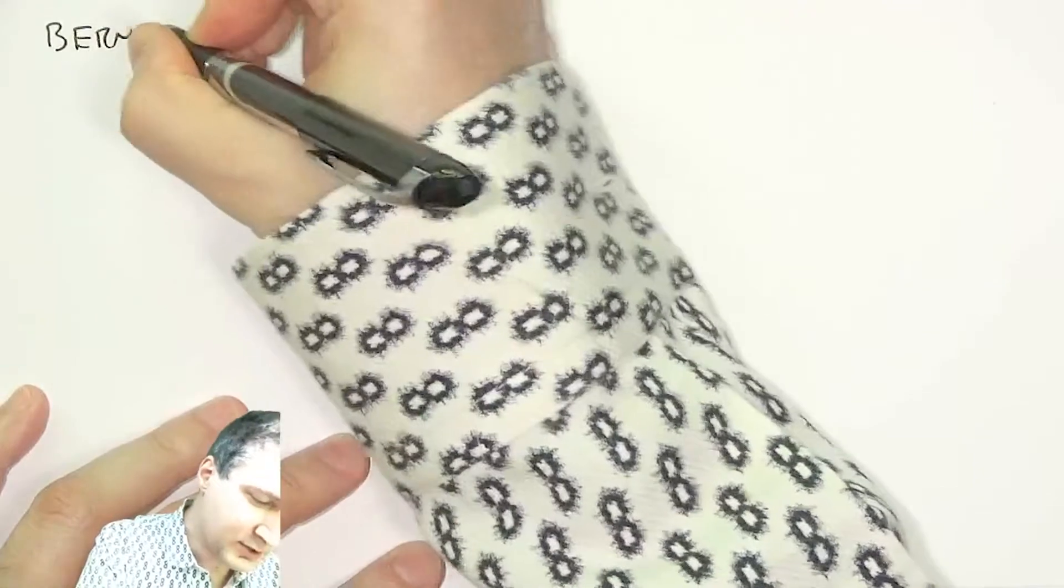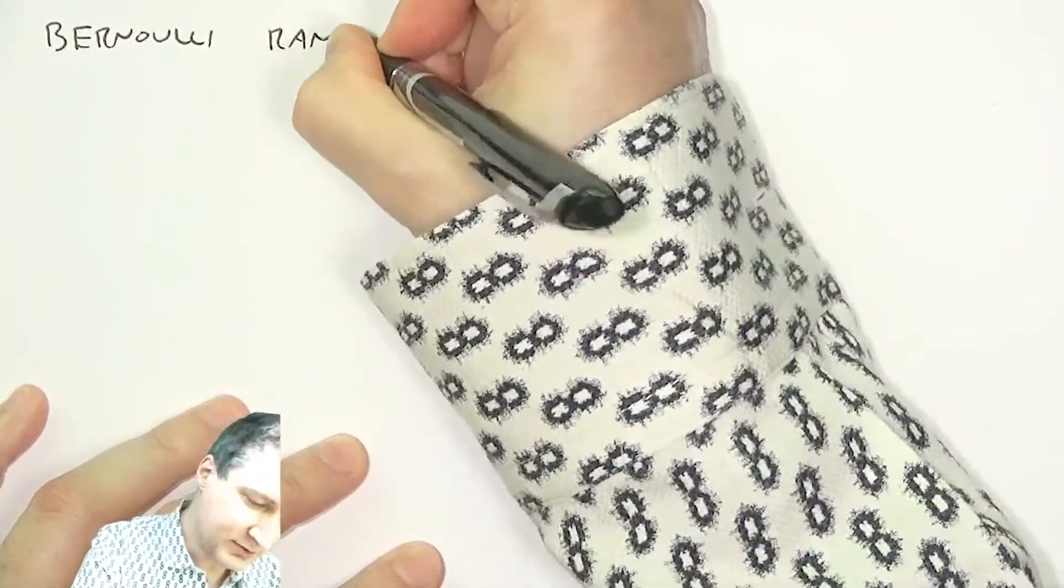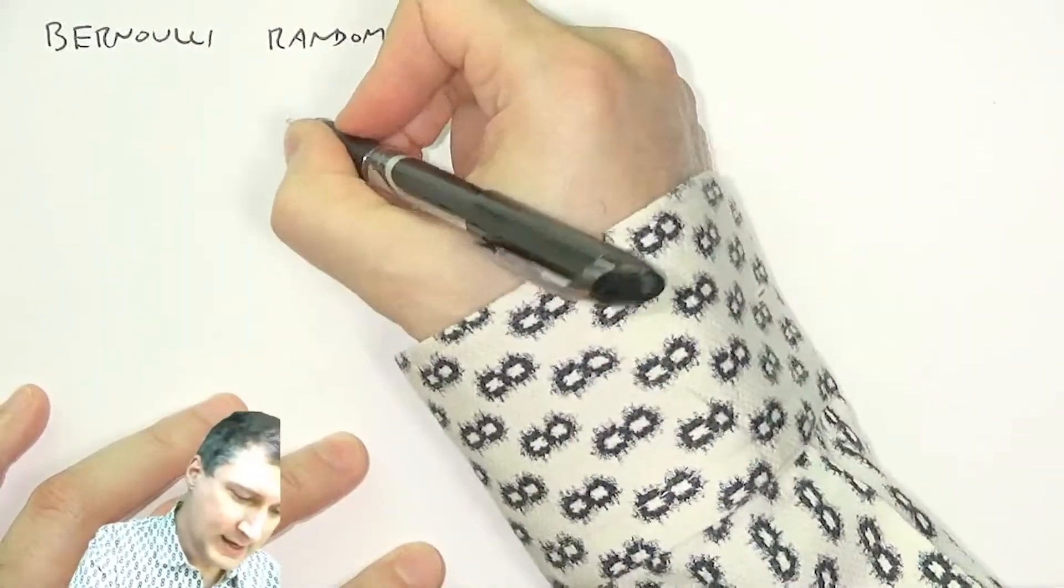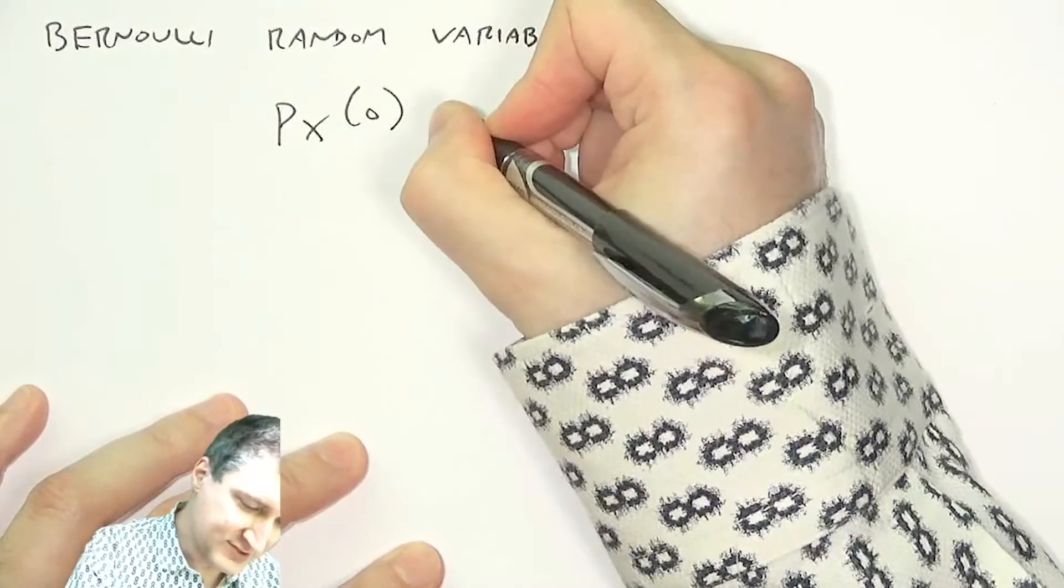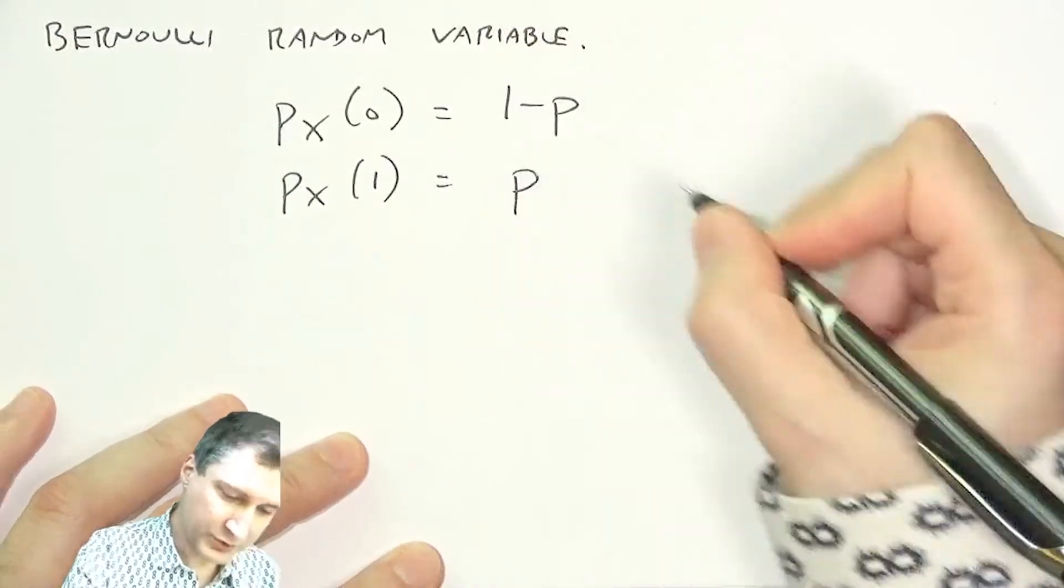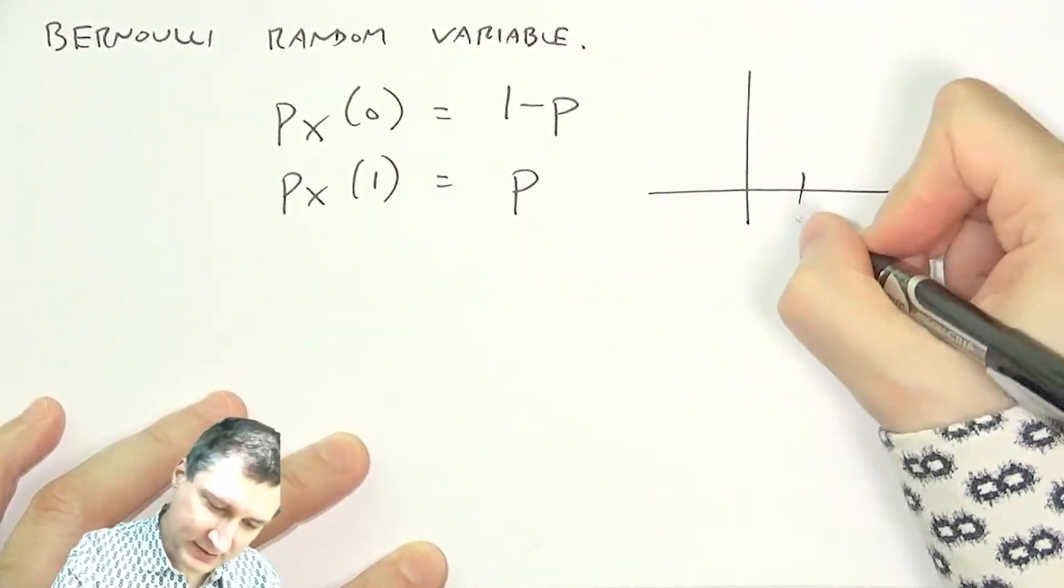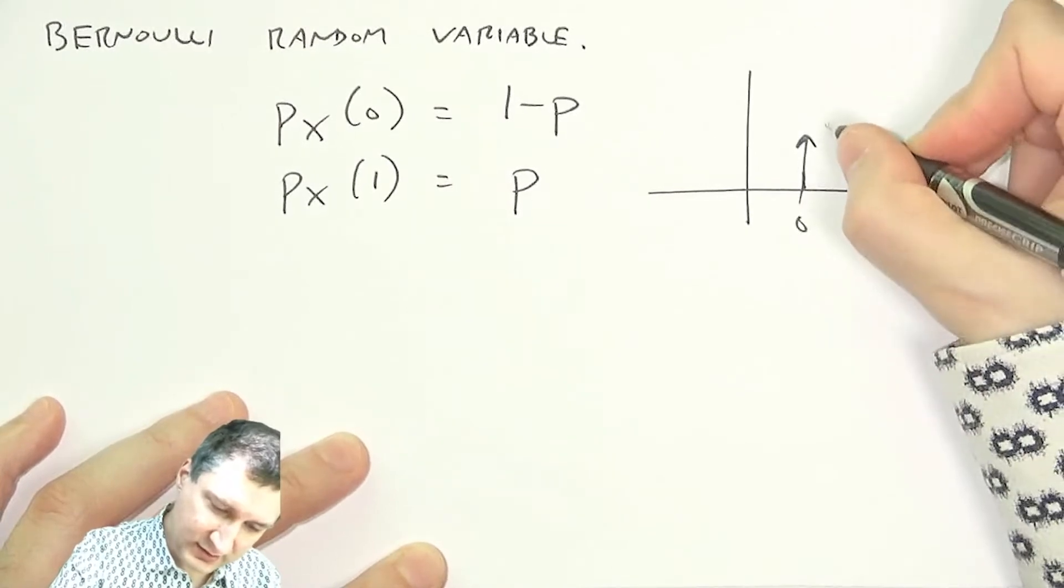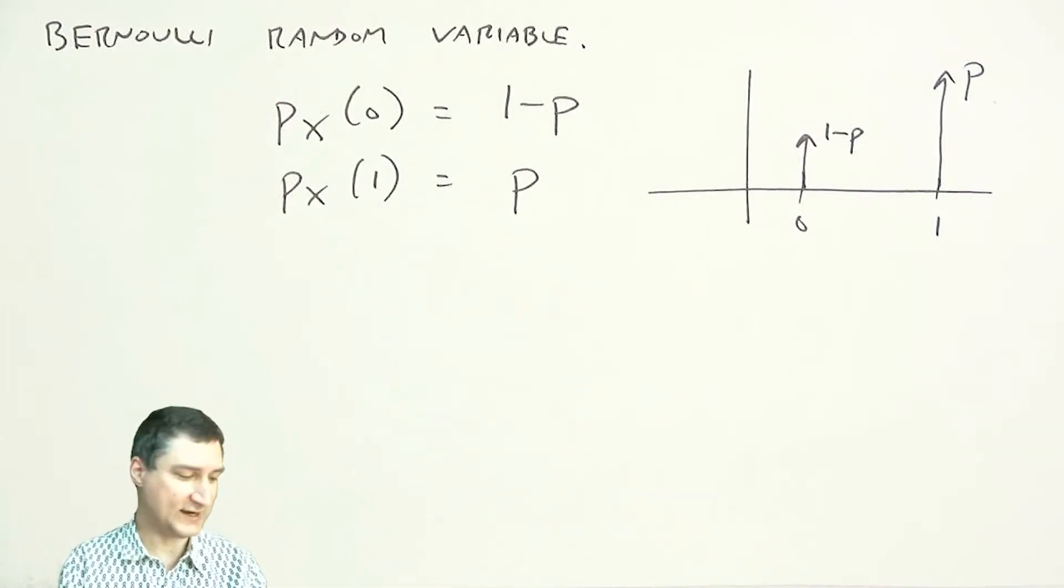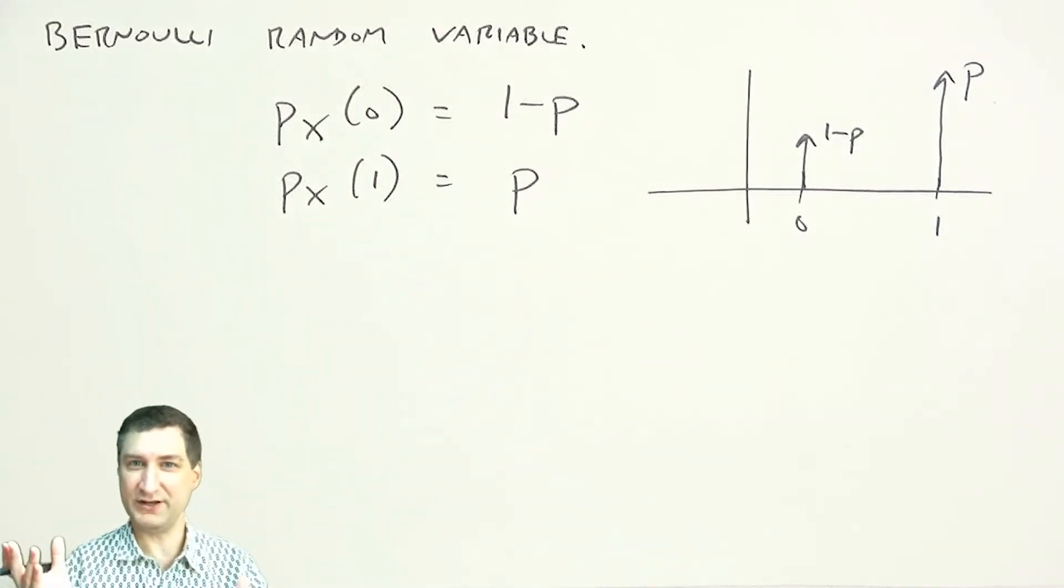Another very common random variable is called the Bernoulli random variable. This is a really simple one. This has two outcomes, either 0, which has probability 1 minus p, or 1, which has probability p. So, I have two numerical outcomes, 1 minus p and p. And again, I can see that these add up to 1 in total. And this is nothing more than a coin flip or a Thanos snap. Either I have success or I have failure, and I assign the probability of success to p and the probability of failure to 1 minus p.